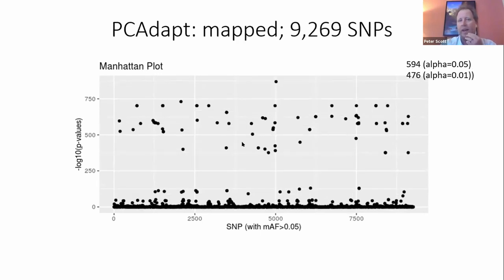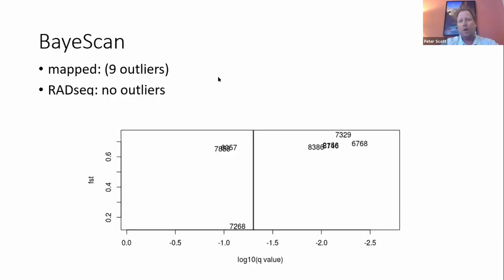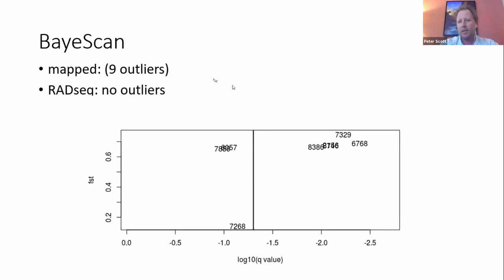We can also do outlier analyses where we look for how populations may be uniquely adapted. We discover a lot of them with RadSeq data and about the same number with the mapped data — so we're not getting an improvement there. But with another outlier analysis looking for specific FST-type outliers, our mapped data allows us to scan the genome from start to end and get a more refined result. With RadSeq data alone we actually don't discover any outliers. So having mapped RadSeq data is actually helping us out.